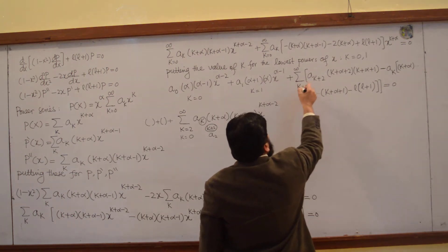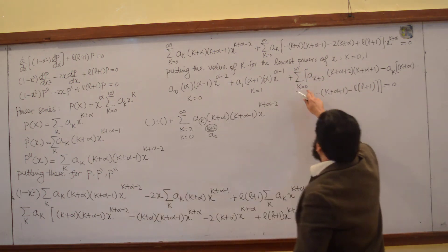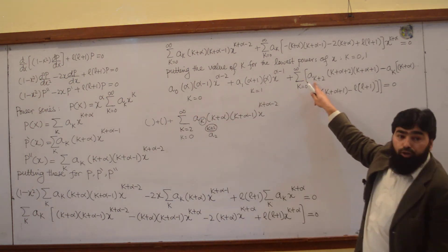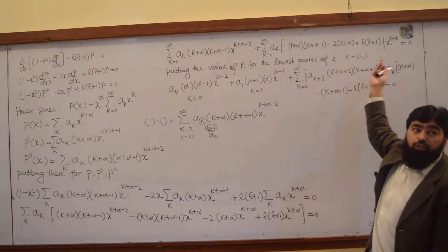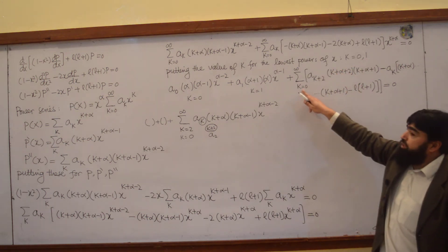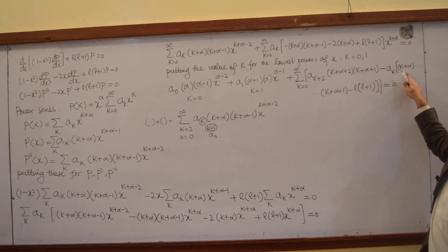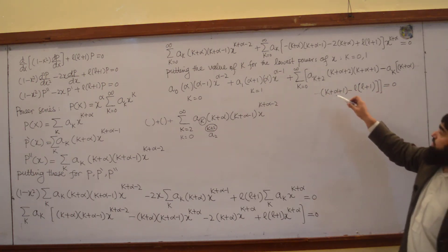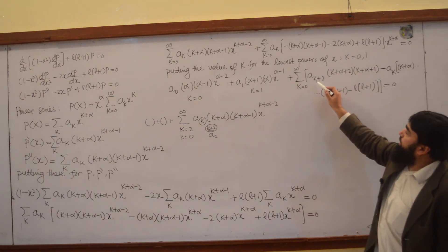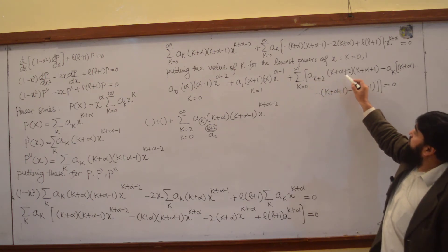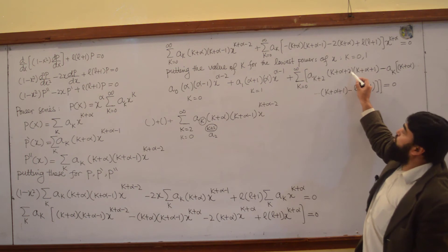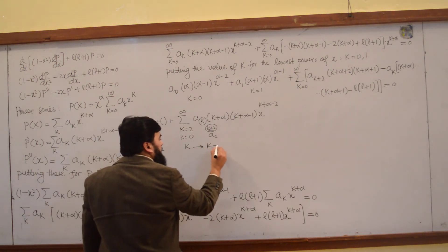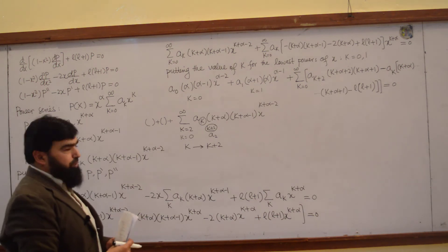By doing this, the k summation from 0 to infinity is combined for all terms. If I put k equal to 0, it gives a_2, then a_3, a_4, and so on. In order not to disturb the sequence of k, I just change these values — wherever there was k, I replace it with k plus 2. So here was k plus alpha, it becomes k plus 2 plus alpha. I did a shift: k went to k plus 2.